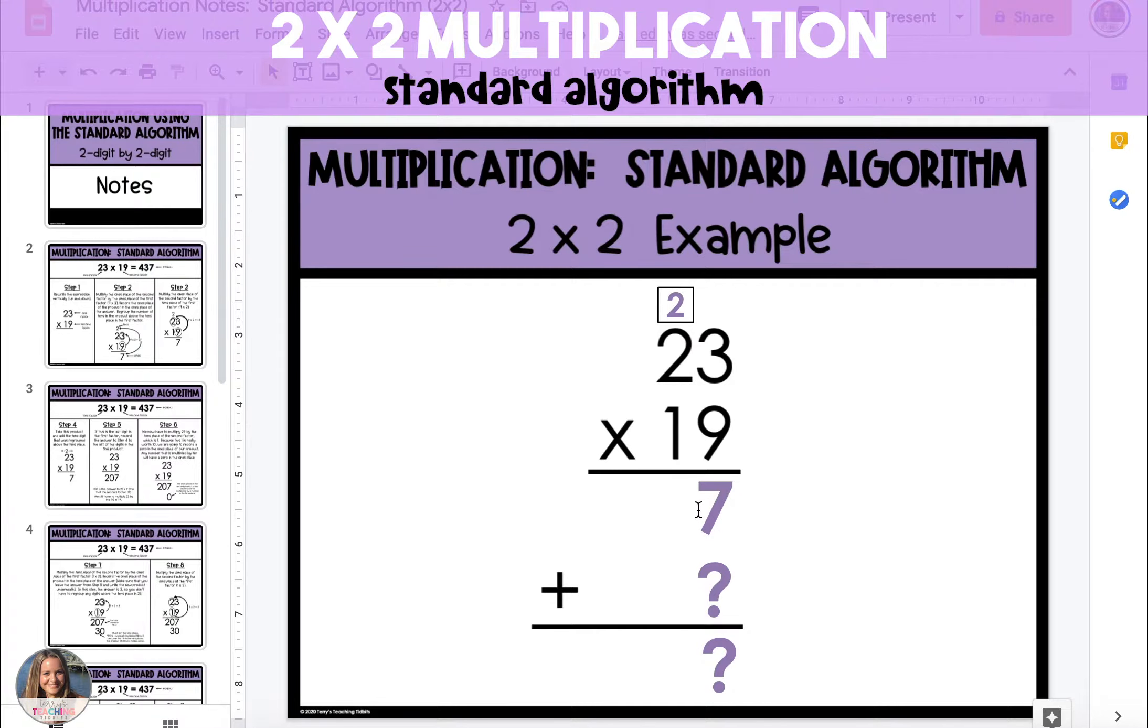Because we don't have a hundreds place to multiply the 9 by, we're going to put our answer of 20 tens into our product to the left of the 7. So the product of 9 and 23 is 207.